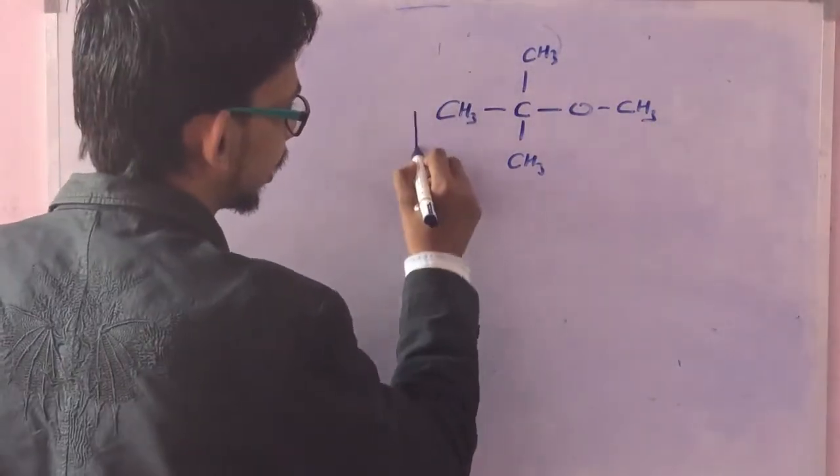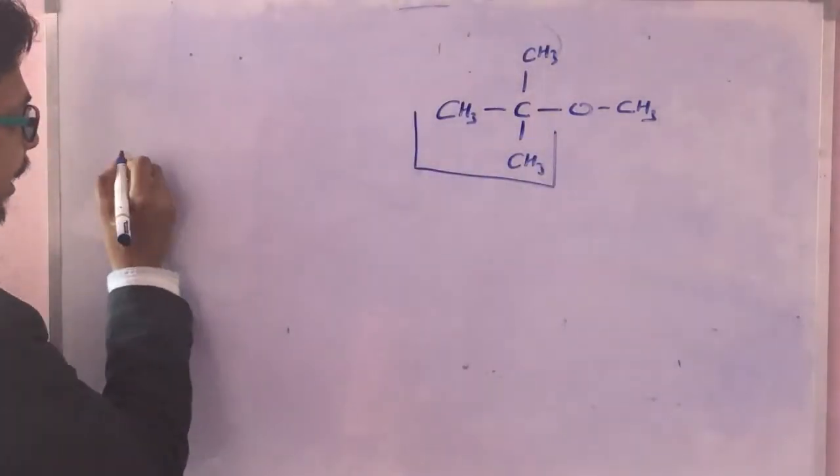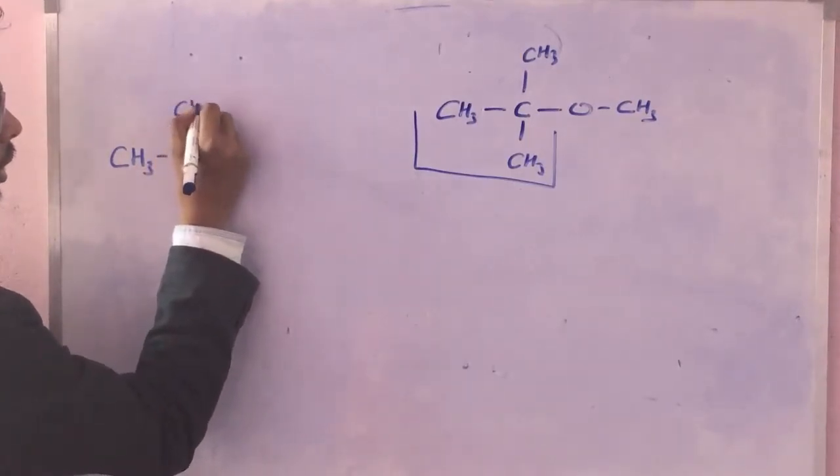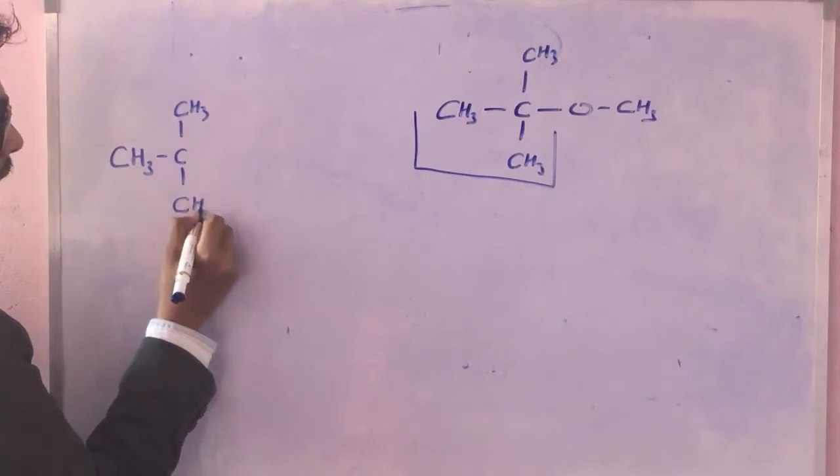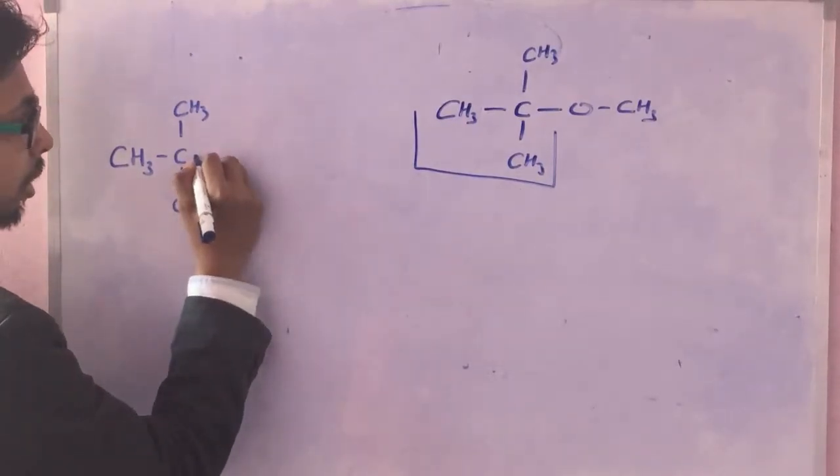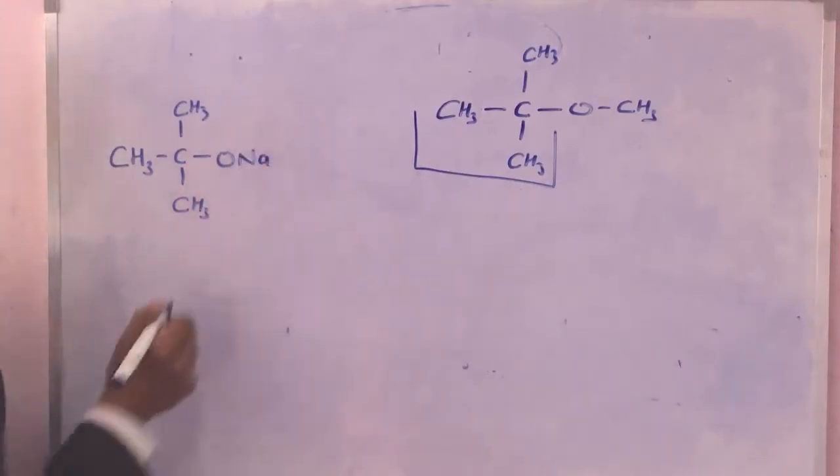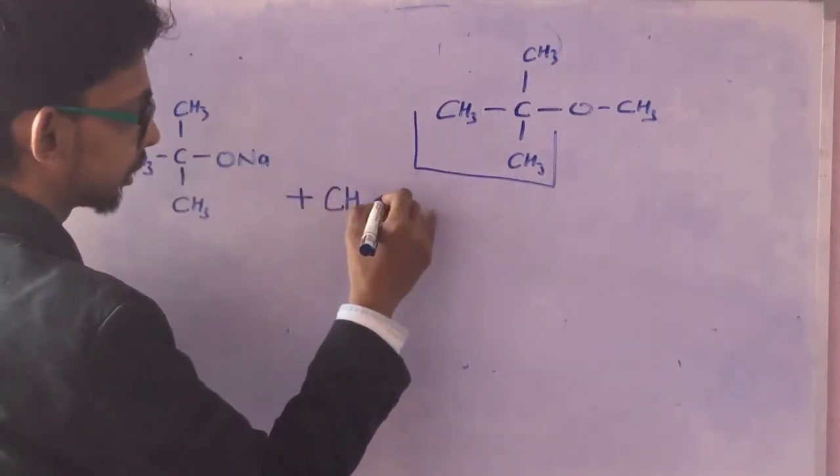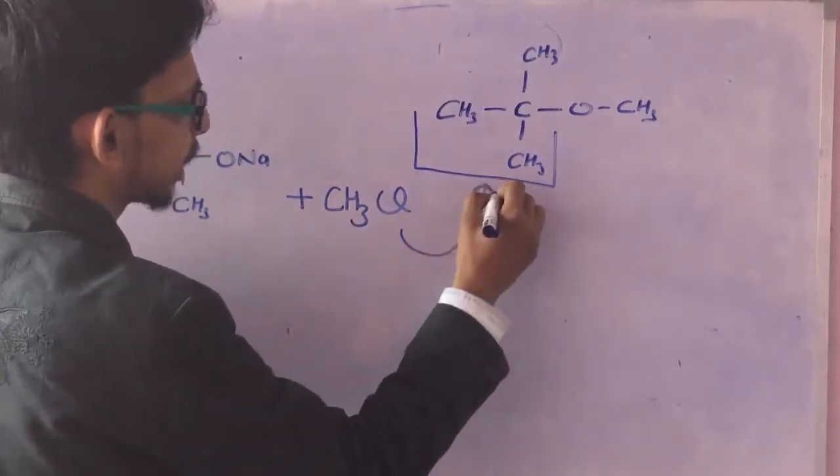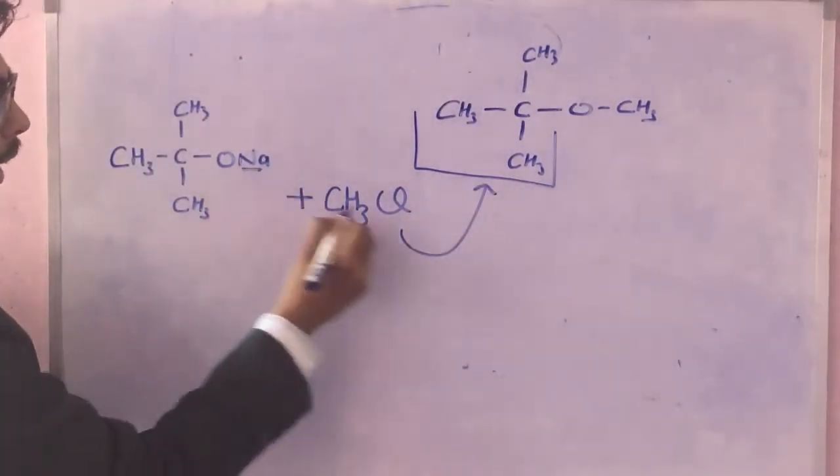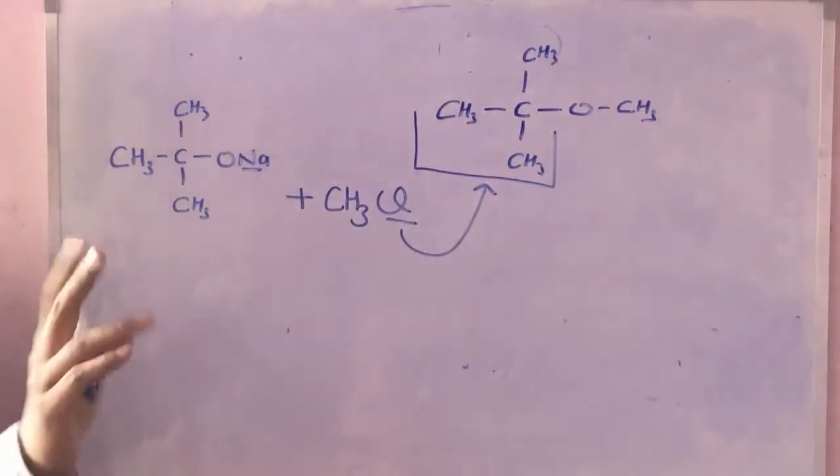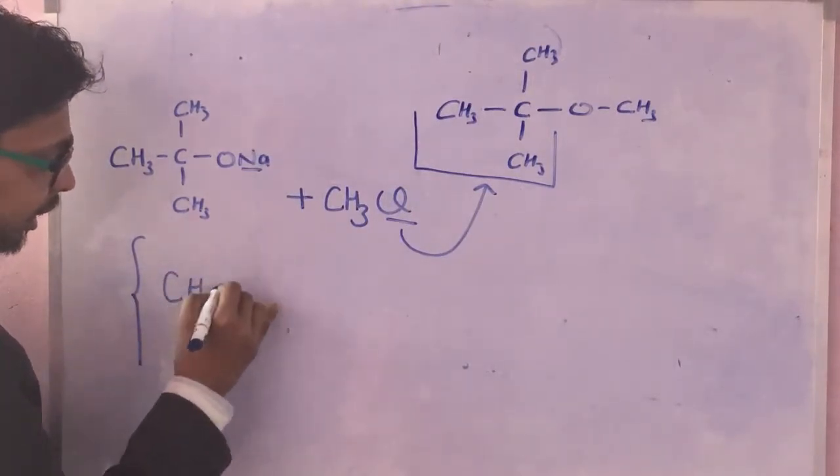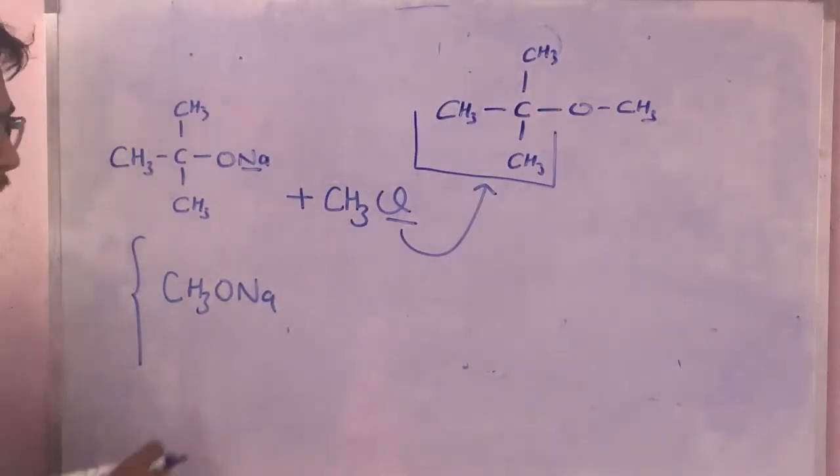Either I can start with CH3-C(CH3)2-O-Na and react with CH3Cl to get this product. This Na and this Cl will come out and I'll get the product. Someone may say that there is one more option, and that is I start with CH3-O-Na.